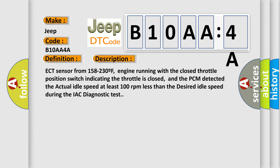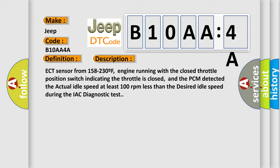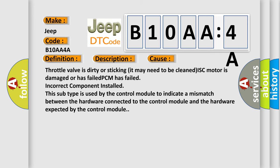This diagnostic error occurs most often in these cases: throttle valve is dirty or sticking it may need to be cleaned, ISC motor is damaged or has failed, PCM has failed, incorrect component installed. This subtype is used by the control module to indicate a mismatch between the hardware connected to the control module and the hardware expected by the control module.